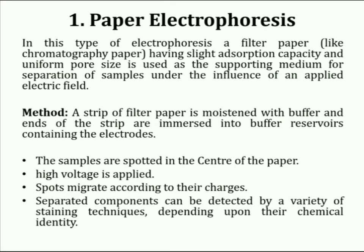The first technique we will discuss is paper electrophoresis. In this type of electrophoresis, a filter paper such as a chromatographic paper having slight adsorption capacity and uniform pore size is used as a supporting medium for the separation of samples under the influence of an applied electric field. A strip of filter paper is moistened with buffer and the ends of the strip are immersed into buffer reservoirs containing the electrodes. The analyte samples are spotted in the center of the paper and high voltage is applied. Due to the movement of sample particles, spots migrate according to their charges.